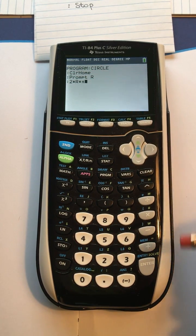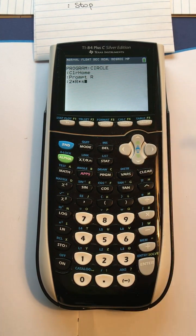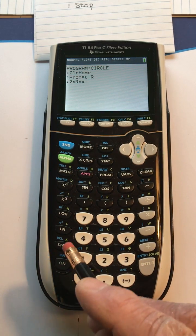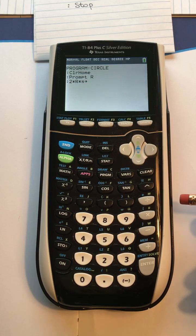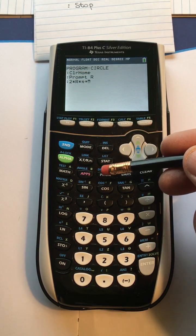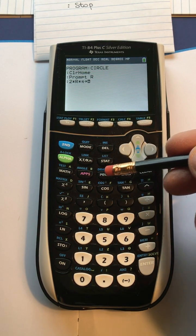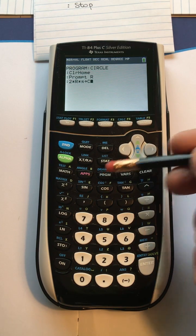So we use store right here, so we press store, that gives us the arrow, and then we do alpha C, alpha C for circumference, and the C is there.